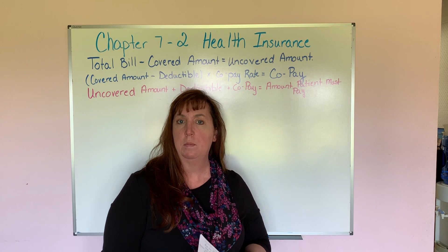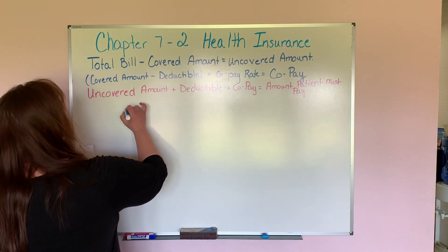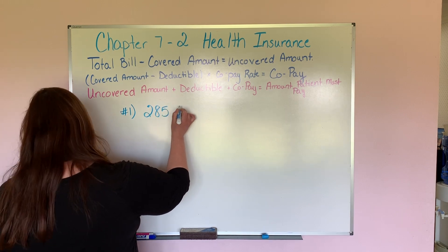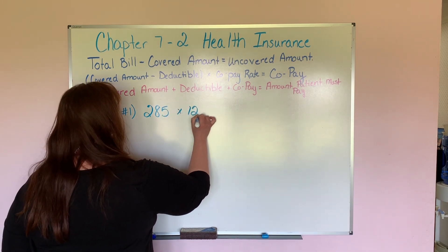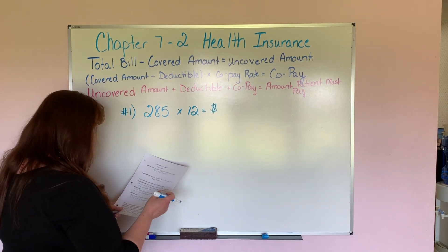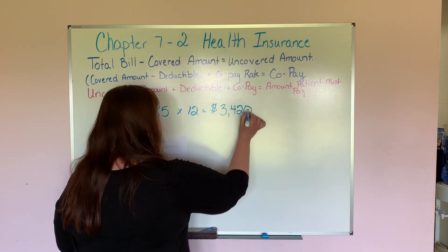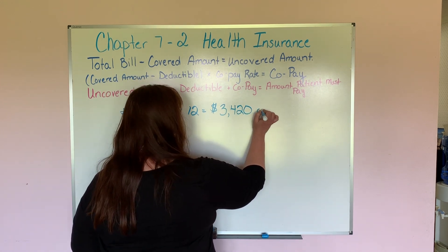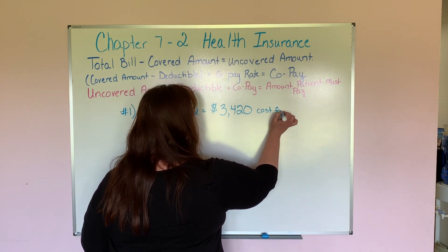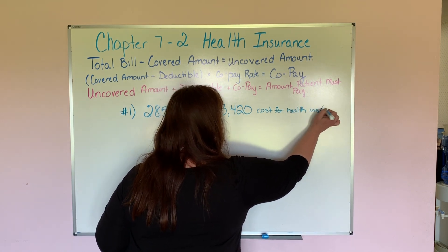Let's first figure out how much they pay for the year — the employer and Leela together. So we take $285 times 12 months. Together, the employer and Leela pay $3,420 per year. That is the total cost for health insurance for the year.